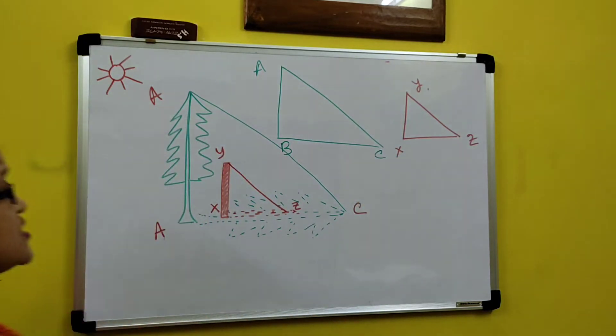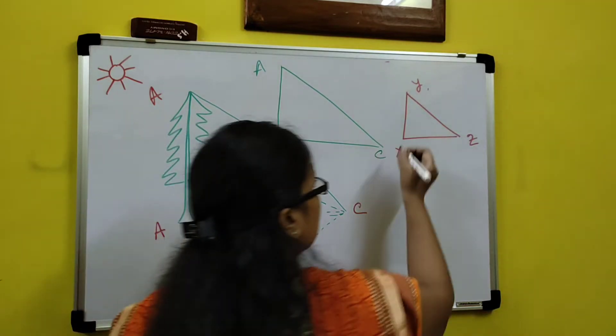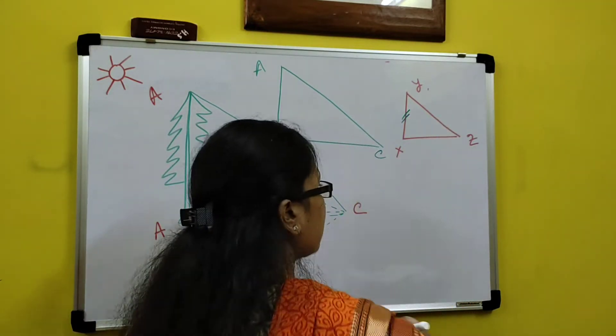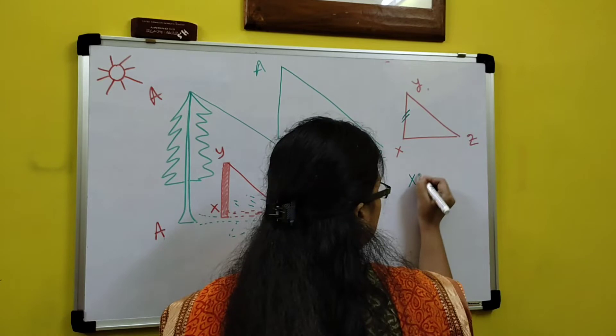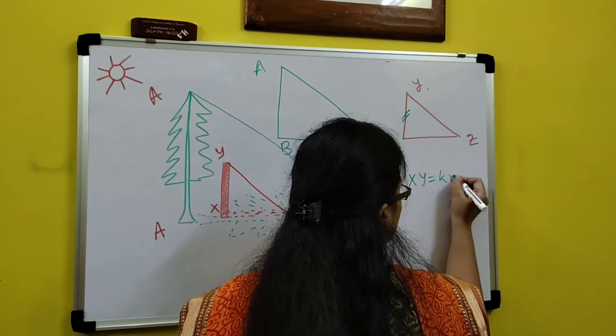This is a big triangle ABC. Now, since I have taken the small stick, I know this one. This is XY, length of XY is known to me. Clear.